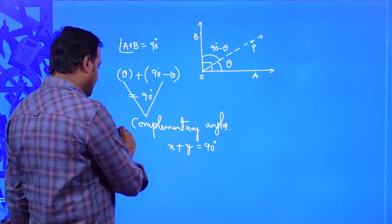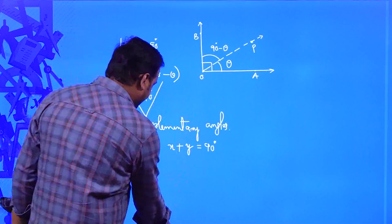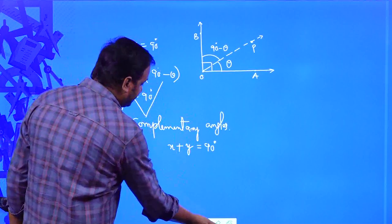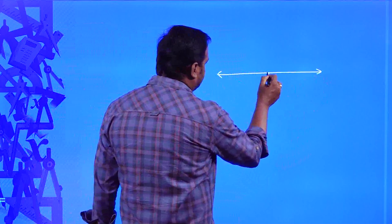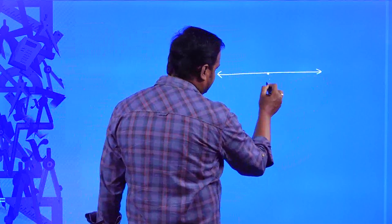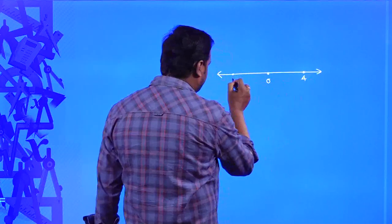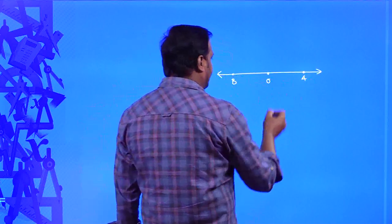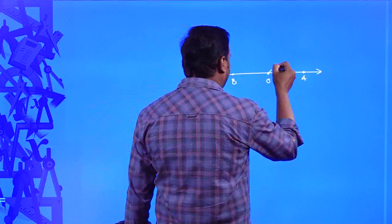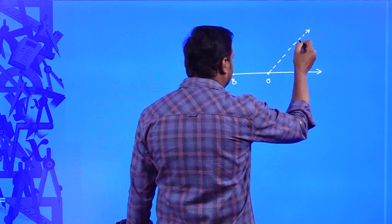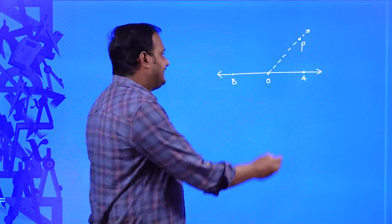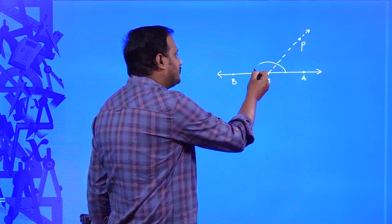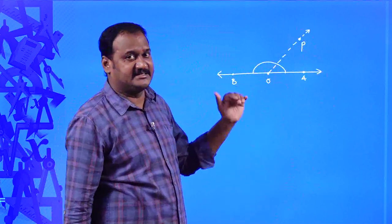So this is about complementary angles — please do remember this. Now coming to the next one: I am taking one straight angle. This is the initial point for both rays OA as well as OB, and there is one more ray OP. The entire angle is going to be 180 degrees because it is a straight angle. This 180 degrees is divided by OP into two angles.